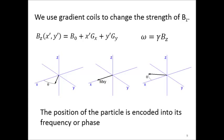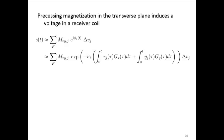Precessing magnetization in the transverse plane induces a voltage in a receiver coil. And the voltage we measure is the contribution from all the particles in the coil's sensitivity region. Mxy is the vector's magnitude, phi is its phase, and delta v is the particle's volume.